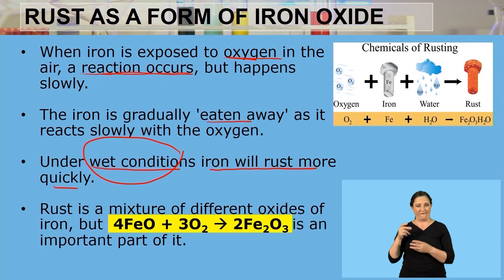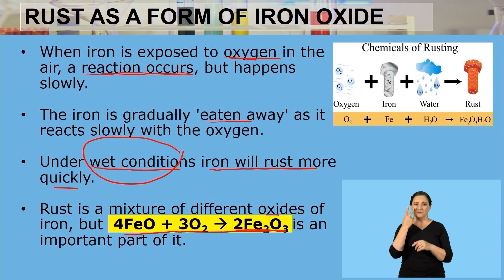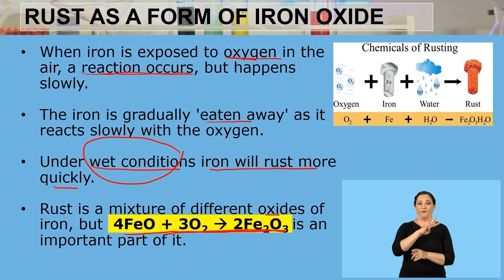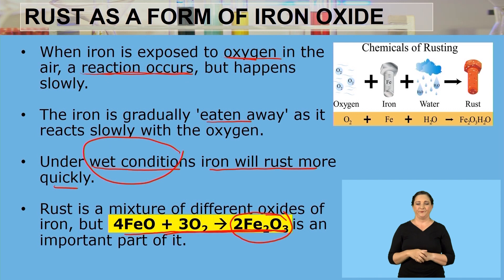Rust is actually a mix of different oxides. The important one we focus on is: 4Fe + 3O₂ → 2Fe₂O₃, which is our iron oxide. The product formed from iron and oxygen is iron oxide.